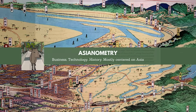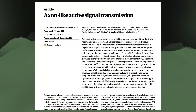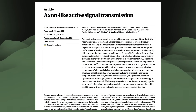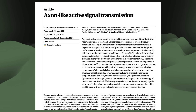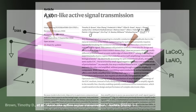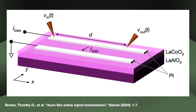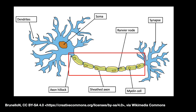A few weeks ago, a Patreon member sent me a paper titled Axon-Like Active Signal Transmission by a team at Texas A&M, Stanford, and Sandia National Laboratories. The paper discusses how the team recently transmitted a signal in an experiment. But the way they transmitted this signal is interesting because it mimics how neurons do it.